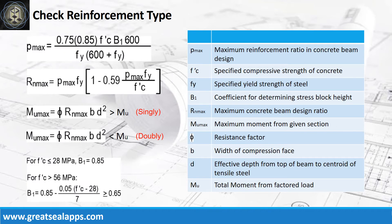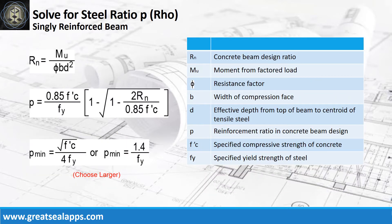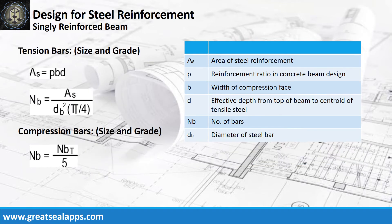Check the reinforcement type of beam, whether singly or doubly reinforced, by first getting the maximum reinforcement ratio ρ_max, then the maximum concrete beam design ratio RN_max, and finally the maximum moment from the given section MU_max. For a singly reinforced beam, get the concrete beam design ratio RN, then the reinforcement ratio ρ, and check minimum required ρ from ACI code. After solving for ρ, get the area of steel and its equivalent number of bars for tension and compression bars.